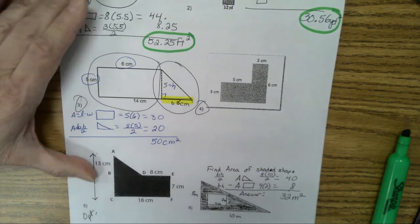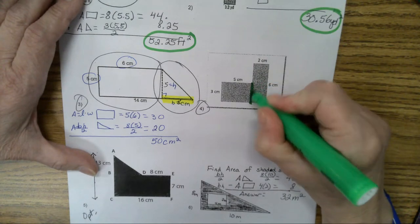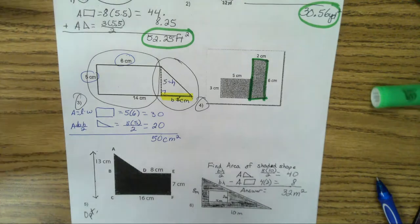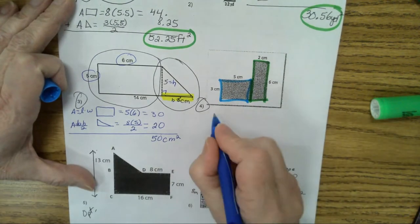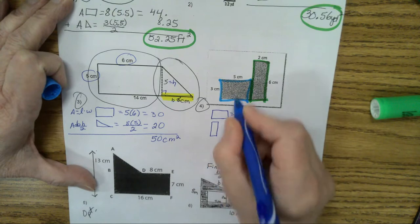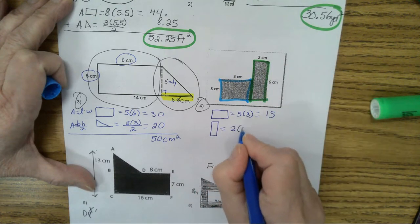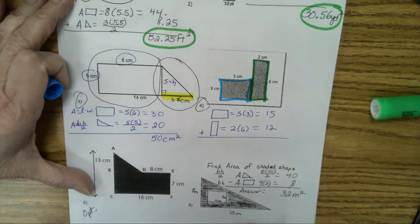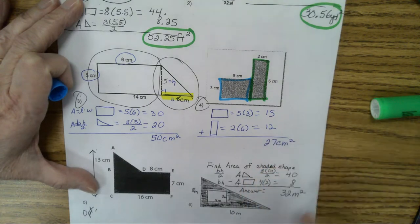For the next problem, you can cut it up into two shapes. I am going to cut it here. So I have this rectangle and I have this rectangle. So I'm going to add two rectangles. That's going to be 5 times 3, which equals 15. This one is 2 times 6. And that equals 12. What do I do to these numbers? Add them together. Devon, what do I get when I add these two numbers together? 27 centimeters squared.